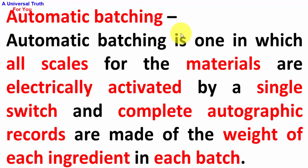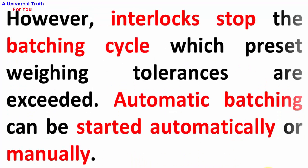Automatic batching is one in which all scales for the materials are electrically activated by a single switch, and complete autographic records are made of the weight of each ingredient in each batch. Interlocks stop the batching cycle when pre-set weighing tolerances are exceeded. Automatic batching can be started automatically or manually.